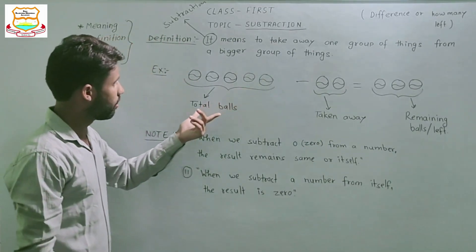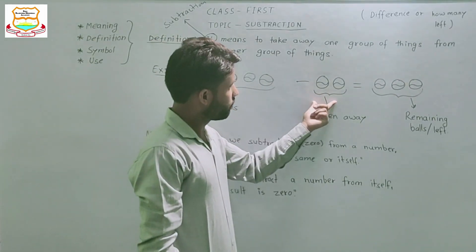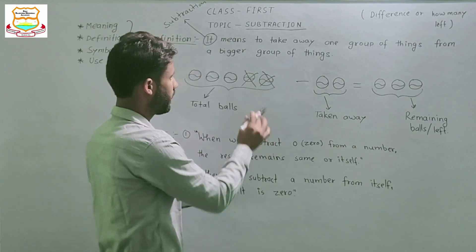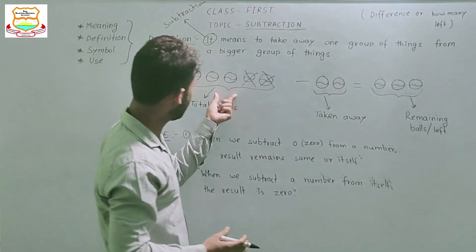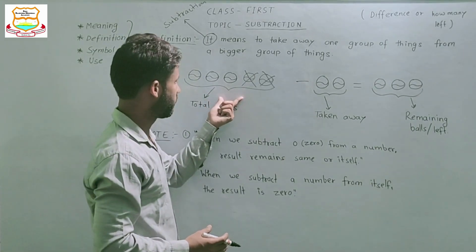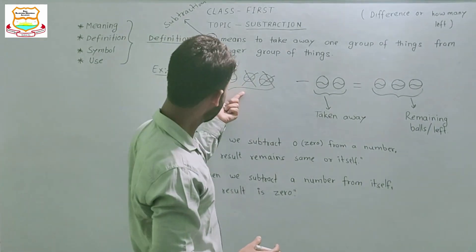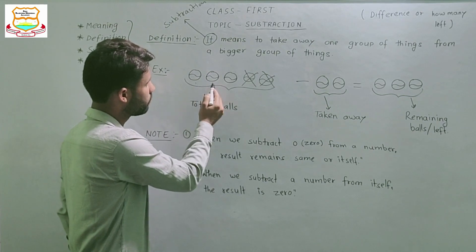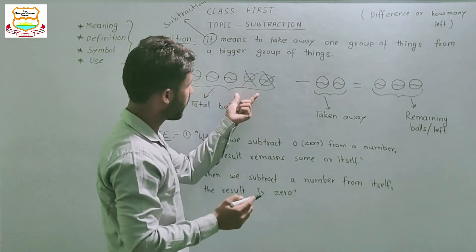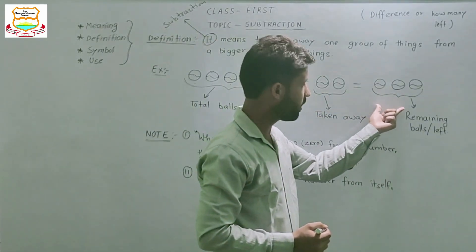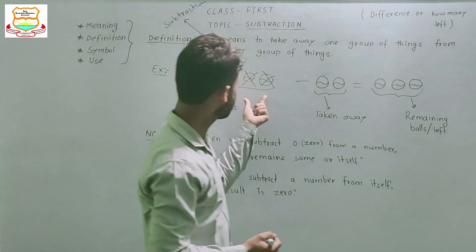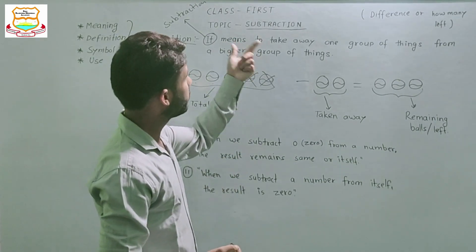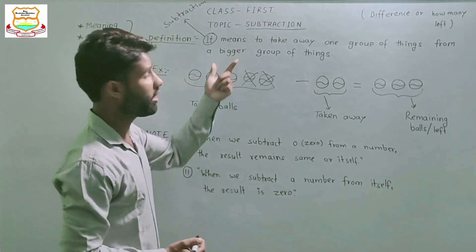Now you are taking two balls away from this basket. How many balls are remaining in this basket? Count: one, two, three. Five minus two equals three, and these three balls are remaining in this basket.